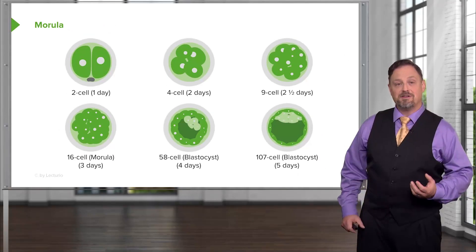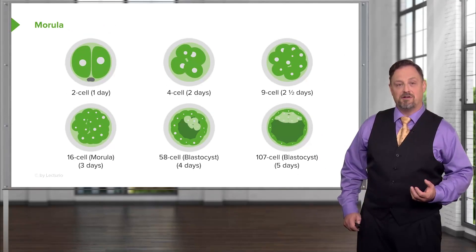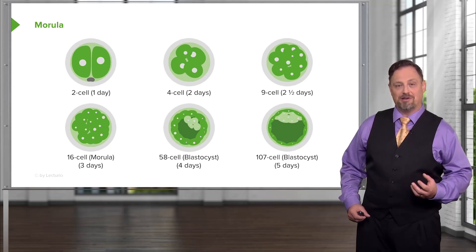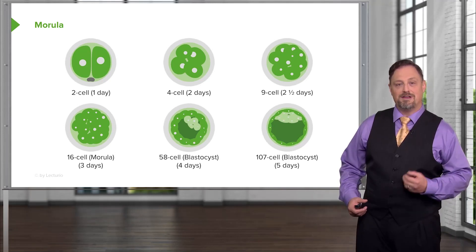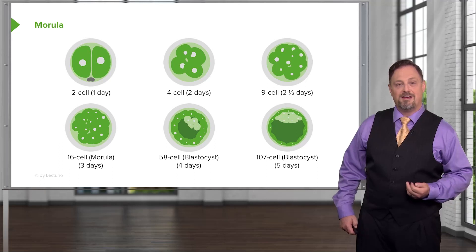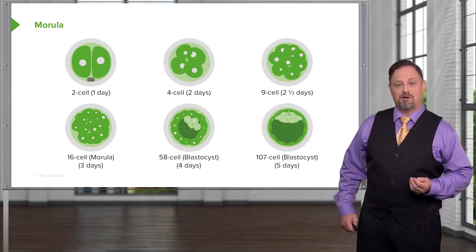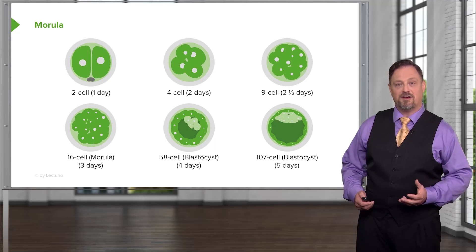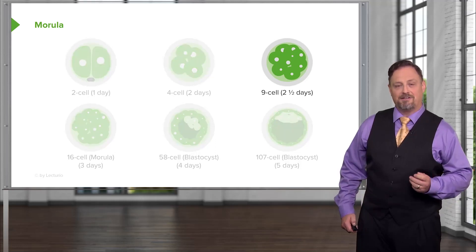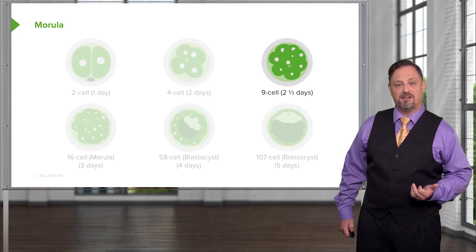At this point, subsequent divisions occur and the resulting cells do not grow appreciably — they take up as much space as the original single-cell zygote did. So they get smaller and smaller even as they become more numerous. We refer to the entire assemblage as a morula, a collection of cells, and we look at the nine-cell stage roughly two and a half days into development.